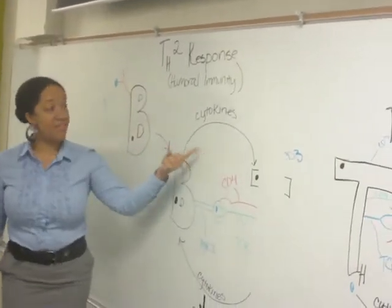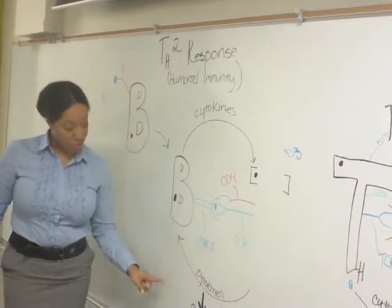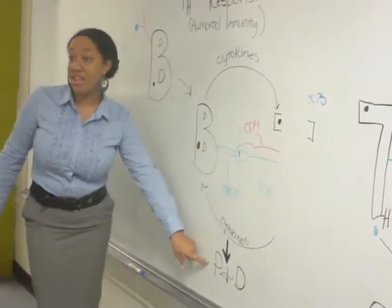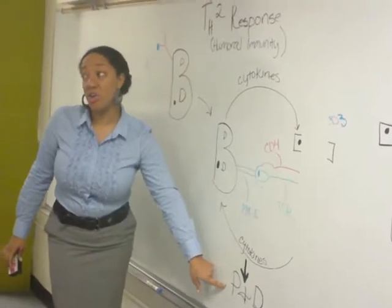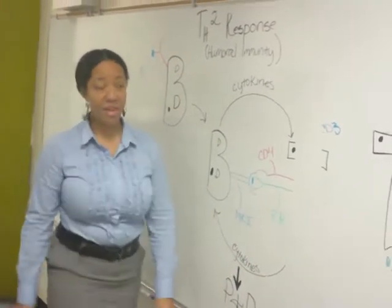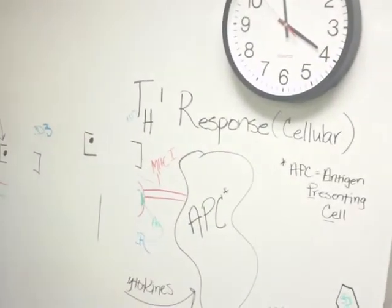So because we no longer have these cells, we're not able to differentiate and proliferate our B cells, and therefore our body can no longer make antibodies. So that affects our humoral response because we no longer have our helper T cell here.